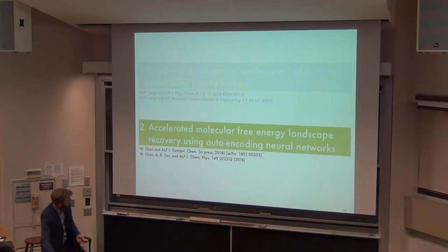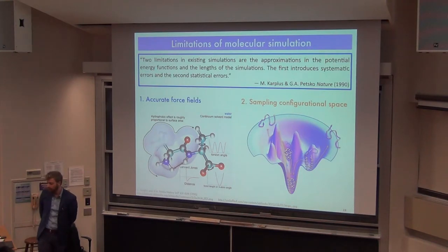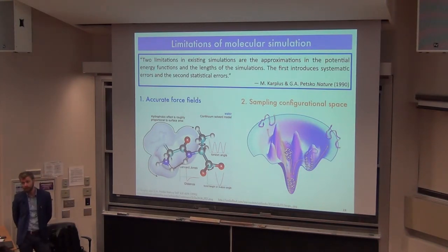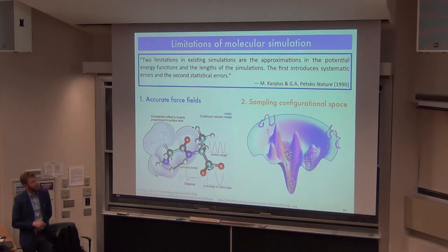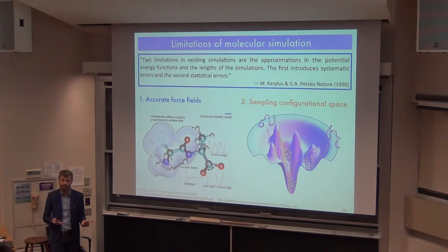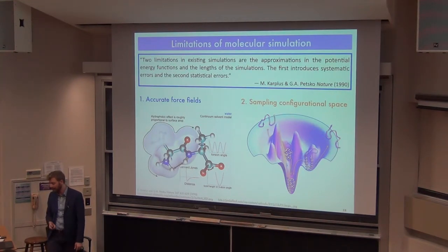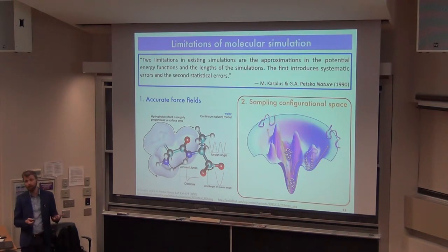Going back to a 1990 paper by Martin Karplus and Greg Petsko, molecular dynamics simulations suffer from two limitations: systematic errors due to potential energy functions — the force fields — and statistical errors due to sampling. Force fields are imperfect, and unless you run for the age of the universe you can't guarantee converged thermodynamic averages. These issues remain equally relevant today. I'll focus on improving the second one: how to do a better job of sampling configurational space with finite computational resources.